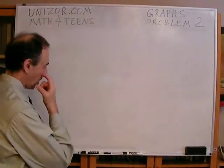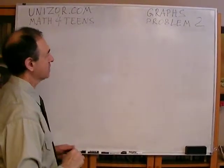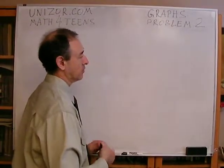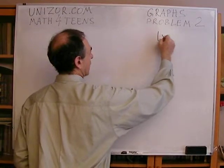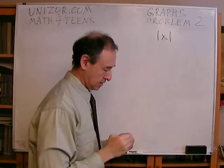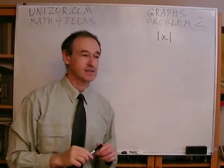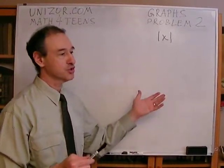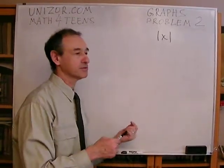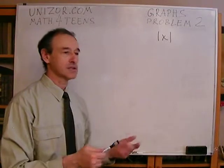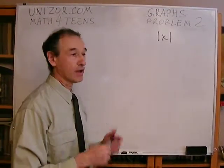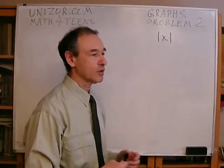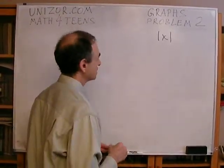My first problem is actually three problems within the same area related to absolute value of numbers. You know that absolute value is informally defined as the number without its sign — for a positive like 2, that's 2 itself, and for a negative like minus 25, the absolute value is 25. This is a non-mathematical definition. The more rigorous definition is the following.